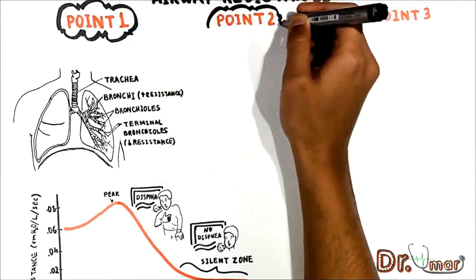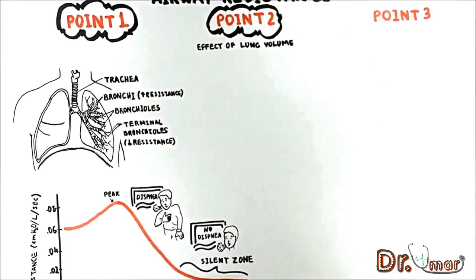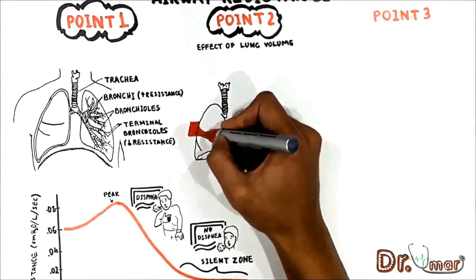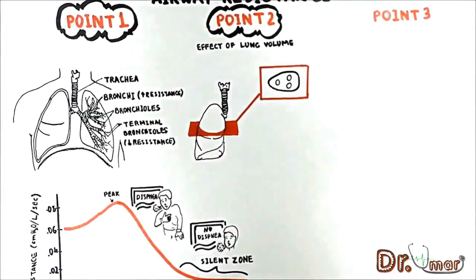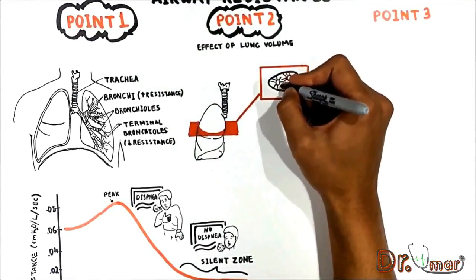The second important point is the effect of lung volume on resistance. This is a cross section of the lung and this represents a small airway within the lung tissue. This airway is attached to the lung tissue.